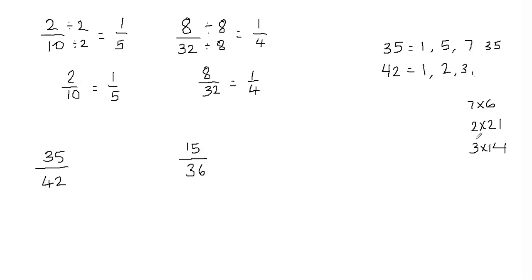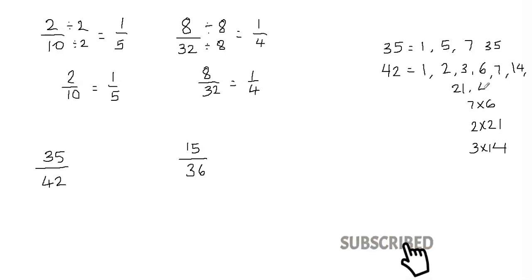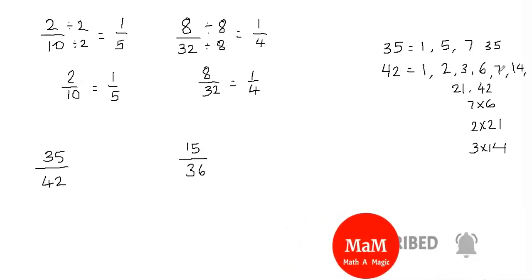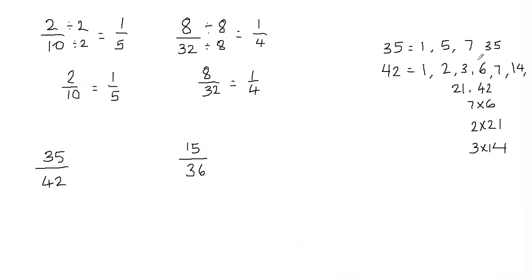Let's write the factors of 42 in order: 1, 2, 3, 6, 7, 14, 21, and 42.